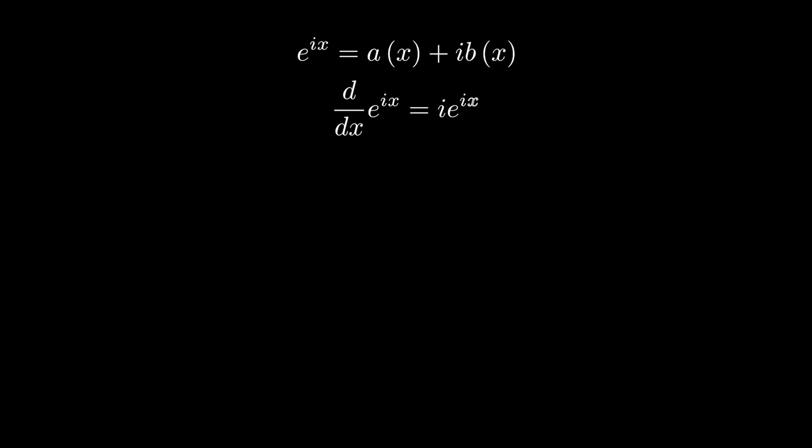So we know that a + bi must also be multiplied by i when its derivative is taken, leading to -b + ai. Taking further derivatives, we end up with these four expressions, being -a - bi, b - ia, and then at the fourth derivative, we return to a + bi. So if we can find two functions that obey these relationships, we can solve it.